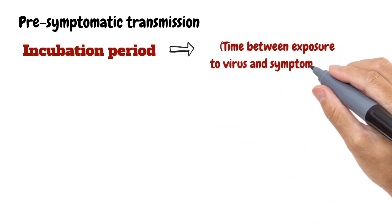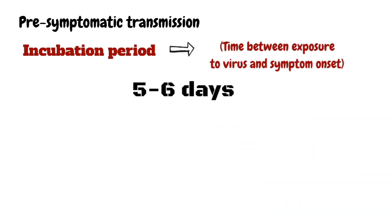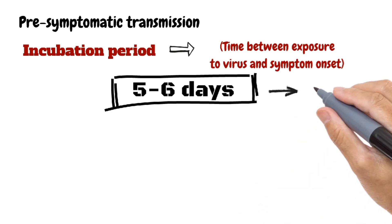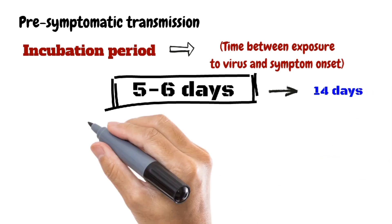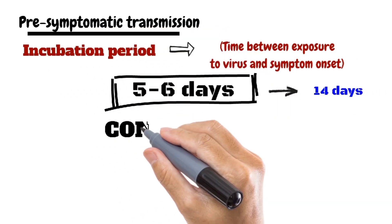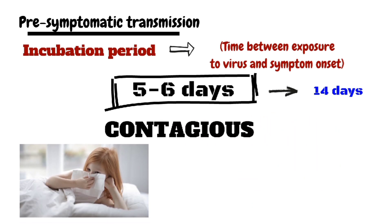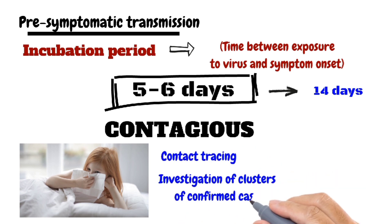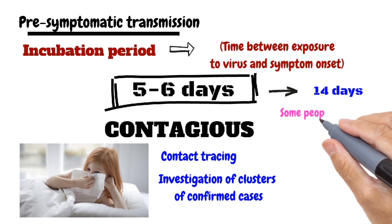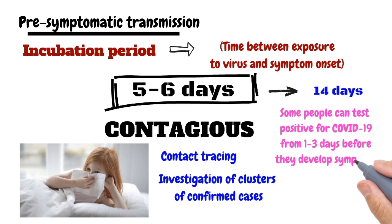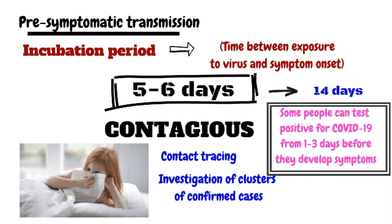Pre-symptomatic transmission: the incubation period is the time between exposure to the virus and symptom onset, which is on average five to six days, but can be up to 14 days. During this pre-symptomatic period, some infected persons can be contagious. Cases can be confirmed by contact tracing and other methods. Some people can test positive for COVID-19 from one to three days before they develop symptoms.